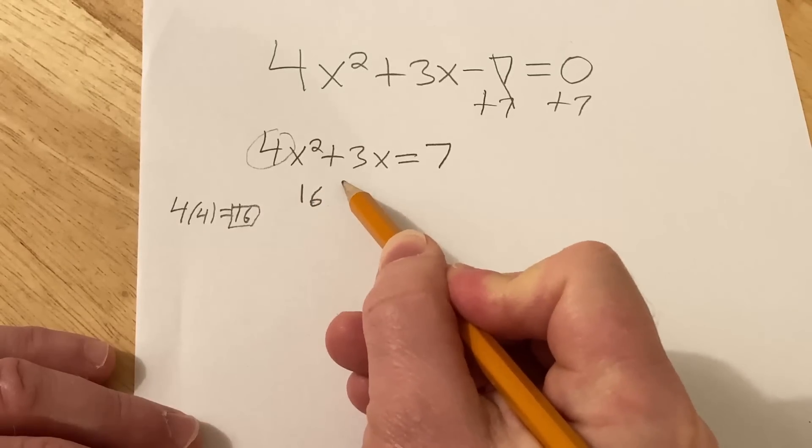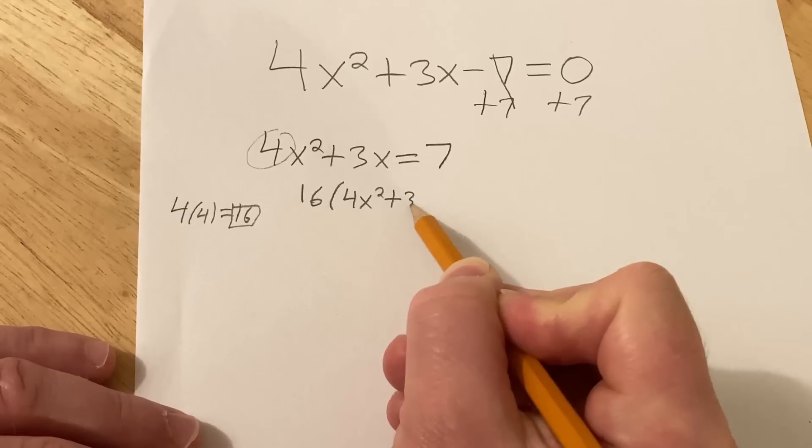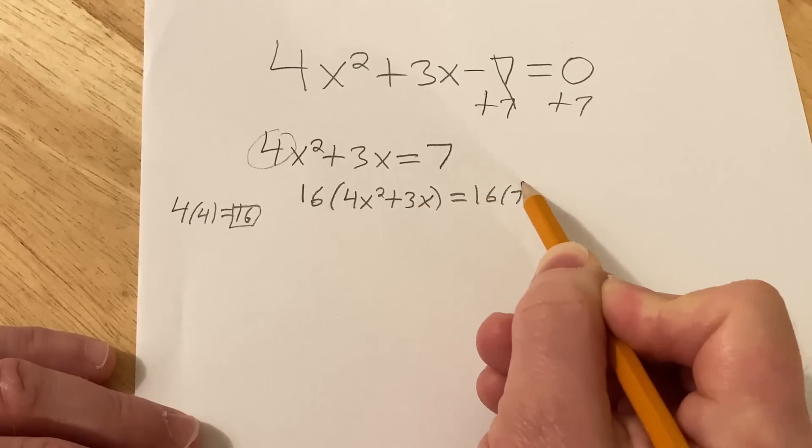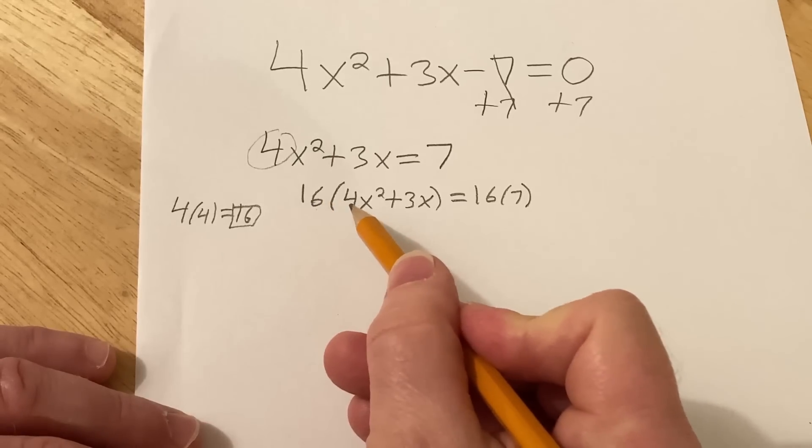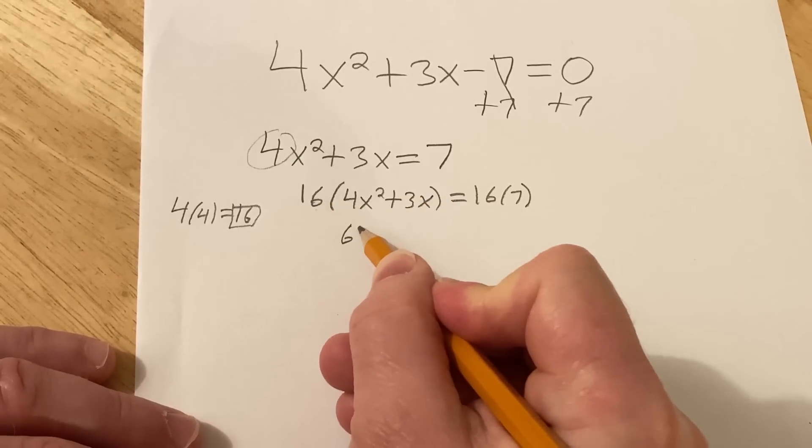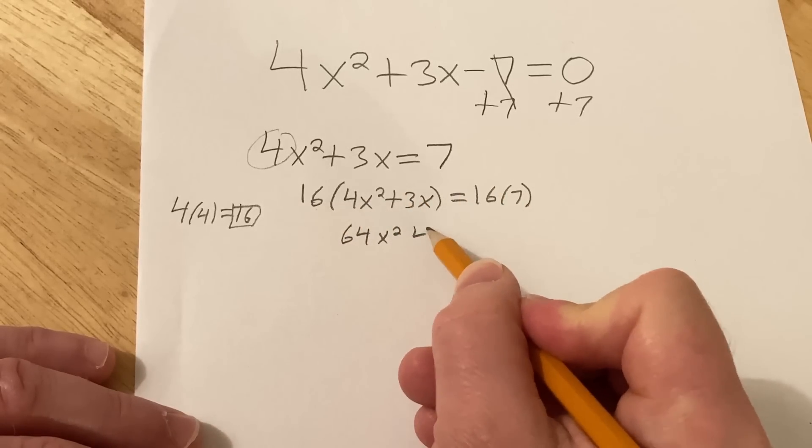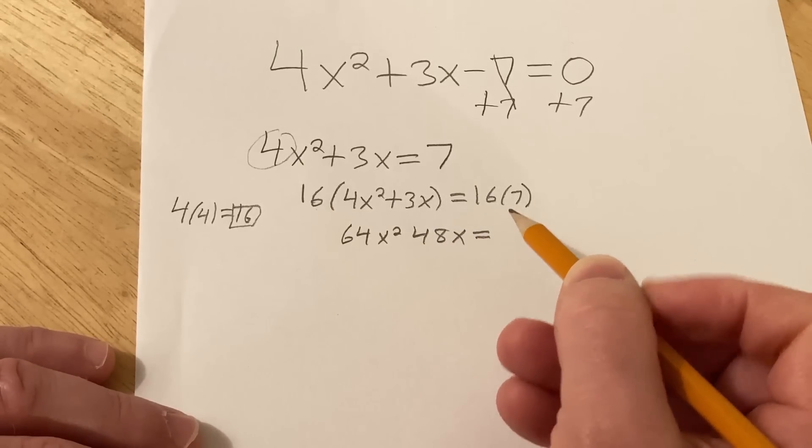So I'll go ahead and put the 16 here. Then we have 4x squared plus 3x equal to 16 times 7. Now we'll go ahead and distribute through. 16 times 4 is 64x squared. 16 times 3x is 48x. And 16 times 7 is 112.